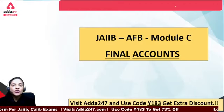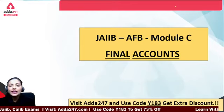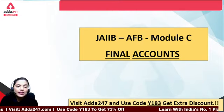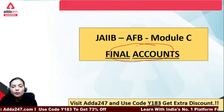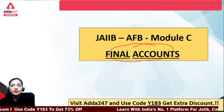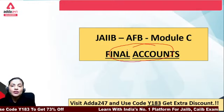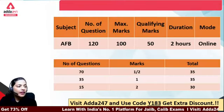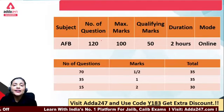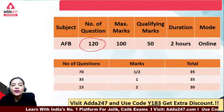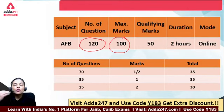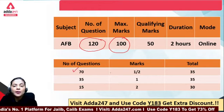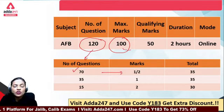Let's move forward. In today's session, we are discussing JIIB's AFB Paper 2 — what are the important topics in Module C? The AFB paper has a total of 120 questions carrying 100 marks. Out of 120 questions, 70 questions carry half marks each, 35 questions carry one mark each, and 15 questions carry two marks each.